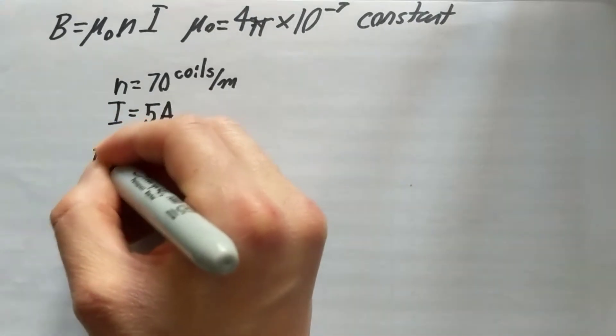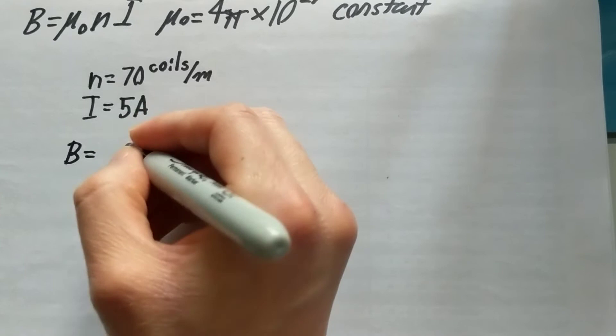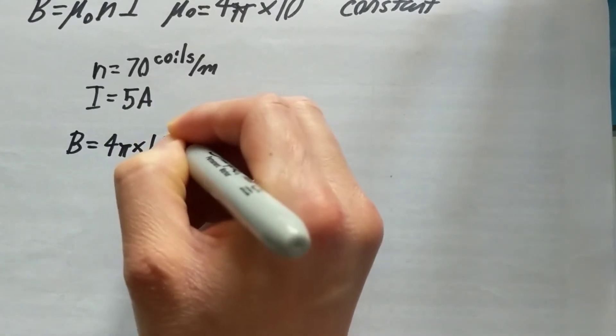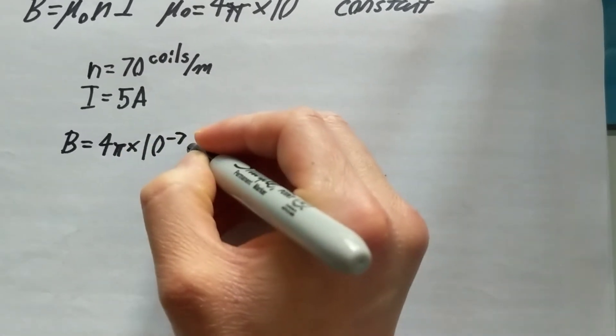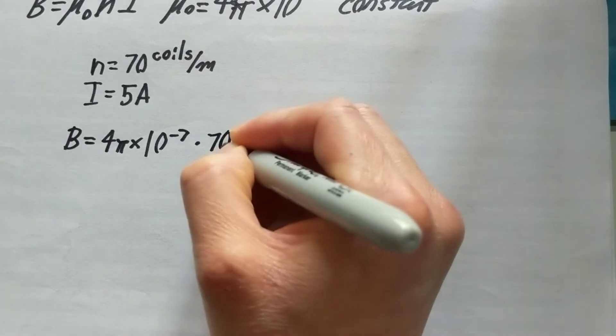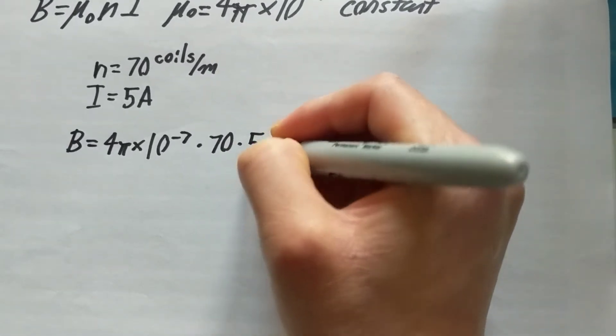So if we said this, the magnetic field of this solenoid is dependent on 4 pi times 10 to the negative 7th, multiply by 70 coils per meter and 5 amps.